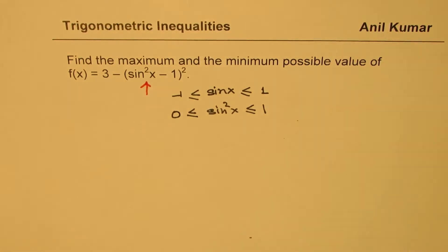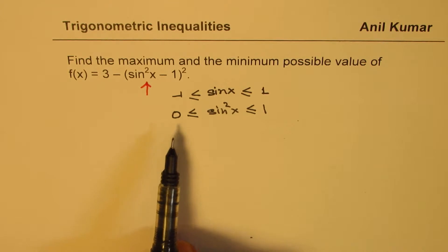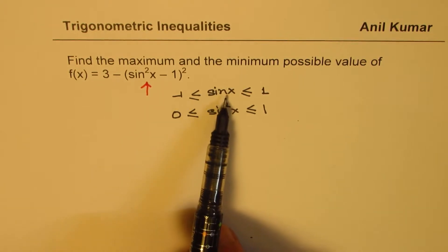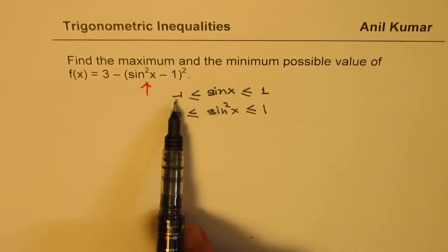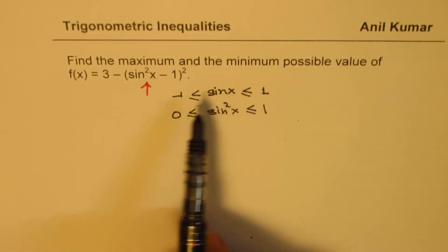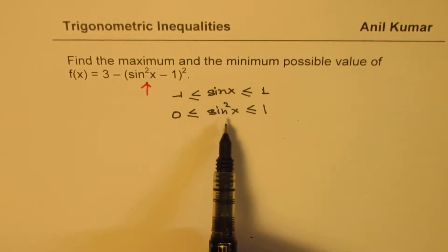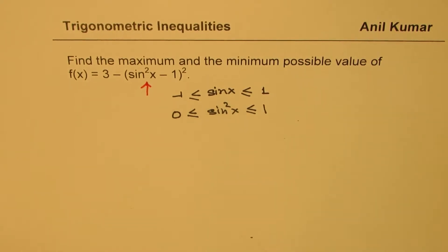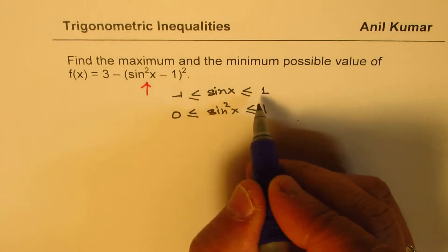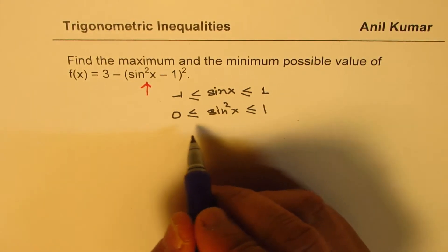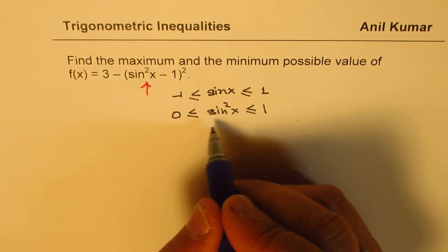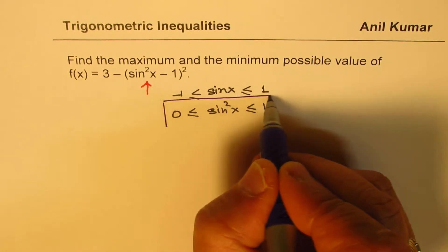Now this is a very critical step to understand. Just by writing that sin x is greater than minus 1 and plus 1, we cannot square and write 1 and 1 both sides and say sin x is 0. That will be incorrect. So it is a point to understand that the value of sin x is between minus 1 and plus 1, however the value of sin²x is between 0 and 1. Correct.